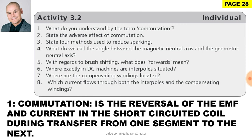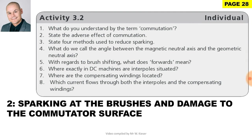Activity 3.2. Question 1: What do you understand by the term commutation? Commutation is the reversal of the EMF and current in the short-circuited coil during transfer from one segment to the next. Question 2: State the adverse effect of commutation. It causes sparking at the brushes and damage to the commutator surface.